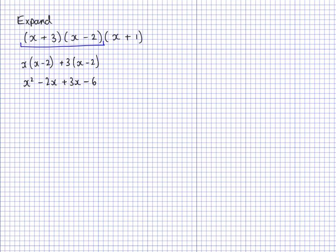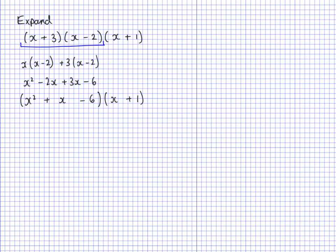Now the middle two terms simplify. So I have x squared, and negative 2x add 3x gives me plus x, take away 6. So this section here, I now have x squared plus x take away 6. I've expanded and simplified it. So now, if I multiply this by x plus 1, I have my original expression.